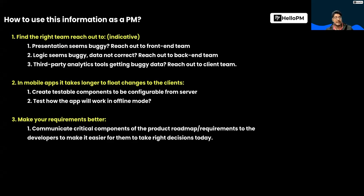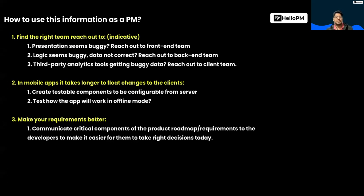You should also test how the app works in offline mode. Now you know there is a back-end containing the logic and data, and a front-end containing the presentation. Your app can also be used in offline mode, so you should make sure you test how your app is going to work if the internet is not there and it cannot connect to the back-end. The third and most important point is that if you understand the critical components of your product roadmap, you are going to make your requirements better.